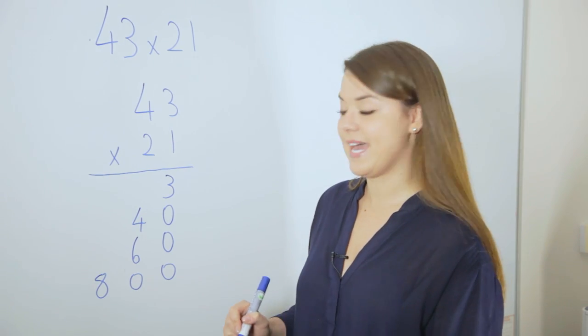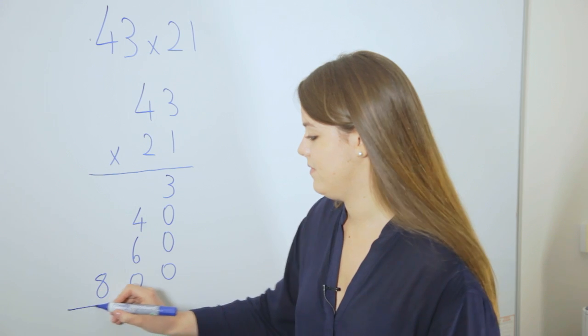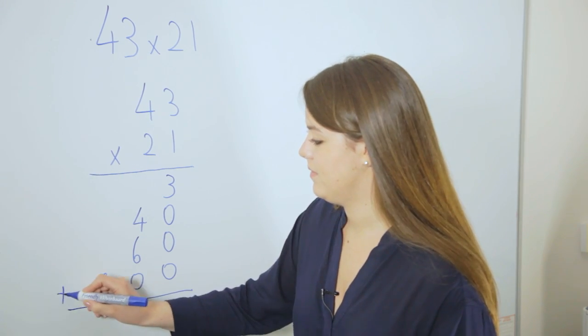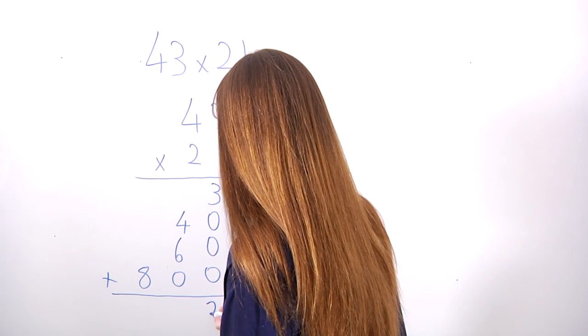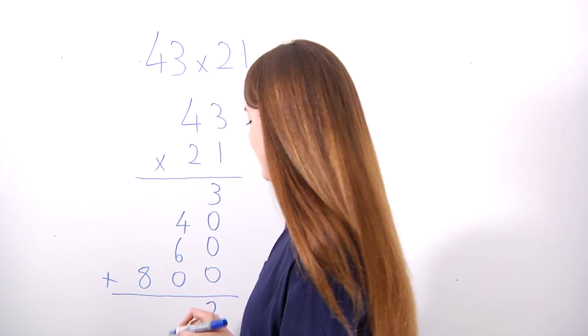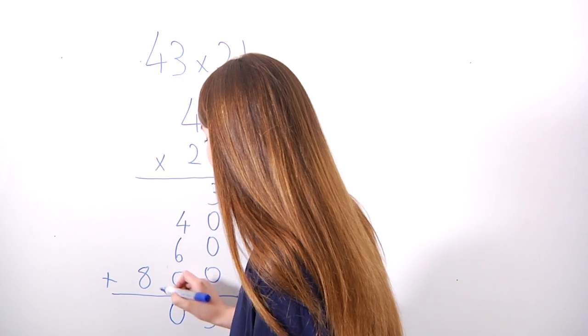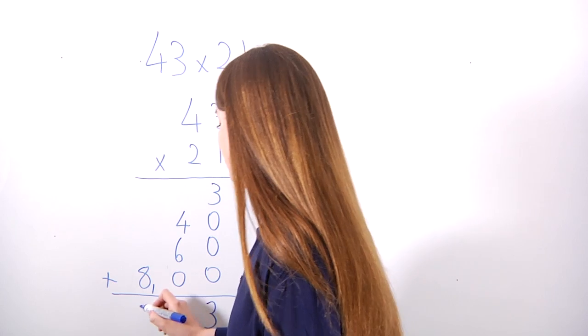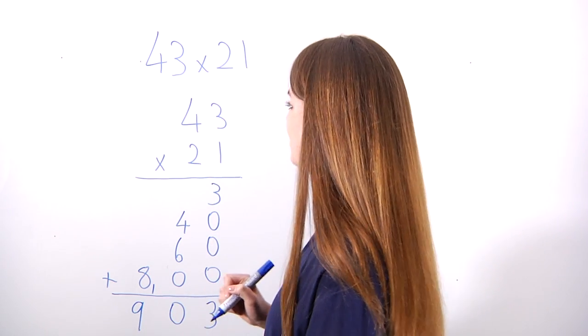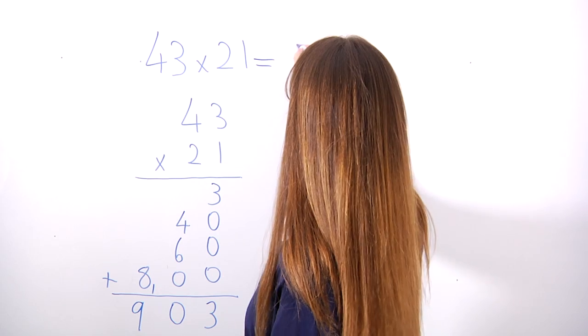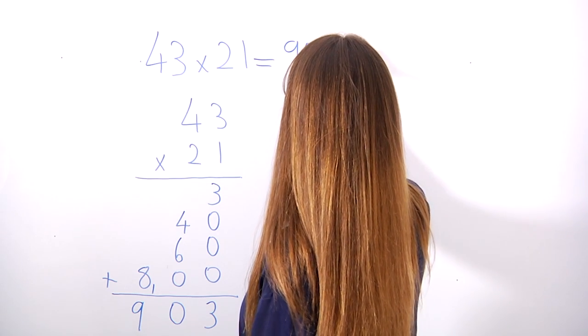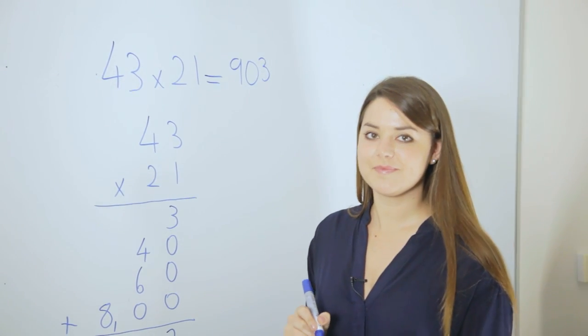To find the answer, we add these together. 10 and we know to place our 0 here carrying over the 10. Our answer to 43 times 21 is 903. And that's what we call expanded multiplication for key stage 2.